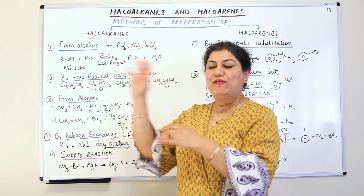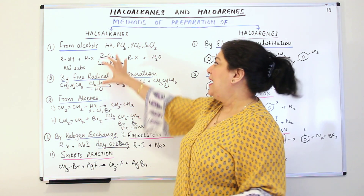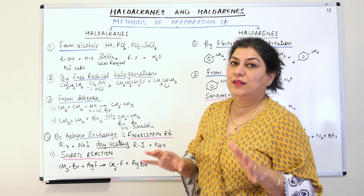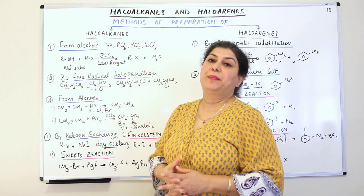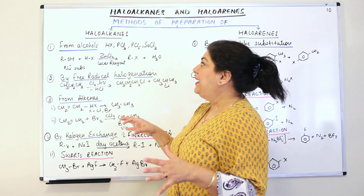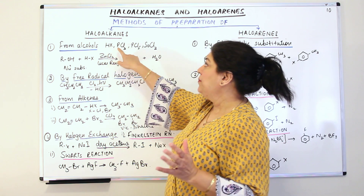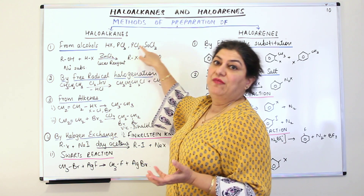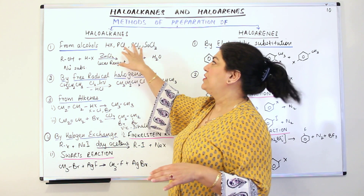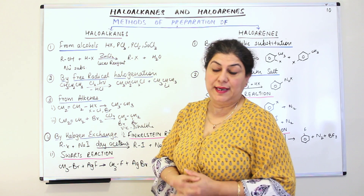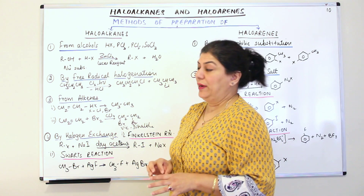This is just a memorizing tool. It will become very easy for you to remember that there are 4 methods of preparation. The first method is that you prepare Haloalkanes from alcohols. When you make alcohols react with HX — that is a halogen acid — PCl3, PCl5, or SOCl2 thionyl chloride, phosphorus trichloride or phosphorus pentahalide, you can prepare the Haloalkanes.